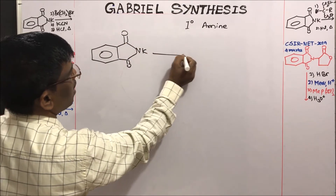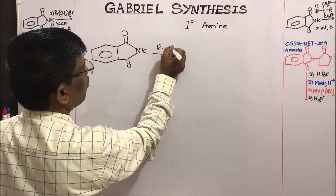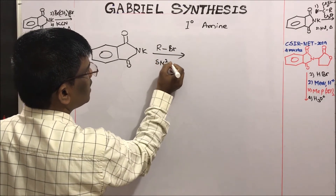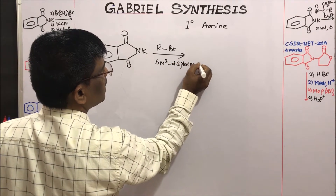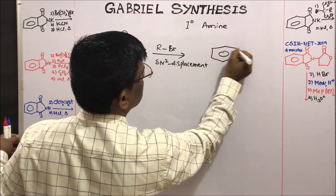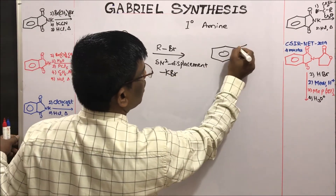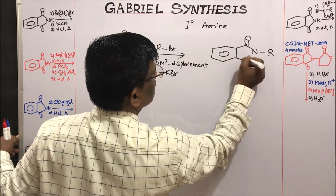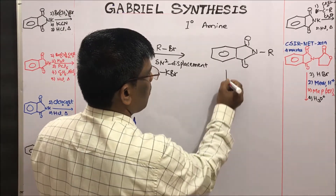Potassium phthalimide, upon reaction with alkyl halides — let us take R-bromide — undergoes an SN2 displacement reaction to give this N-alkylated phthalimide. Minus KBr, it is going to give the N-alkylated phthalimide.